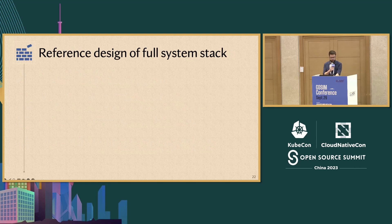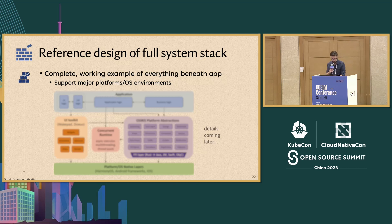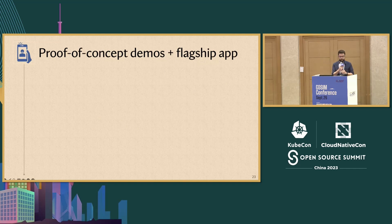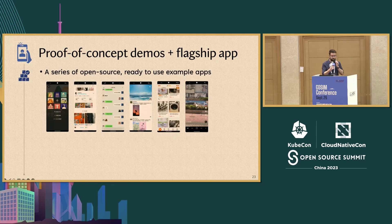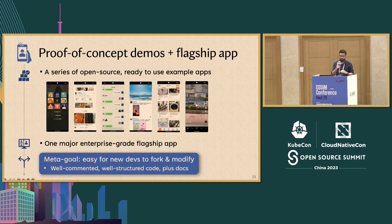For the second goal — a reference design of the full system stack — basically we want a complete working example of everything beneath the app. The goal is to support most of the major platforms and operating system environments. We also want to create a series of proof-of-concept applications as well as a flagship app. These will be open source, ready-to-use examples that someone can grab off the shelf and modify as they see fit. We'll lead with one, perhaps two, major enterprise-grade flagship apps.